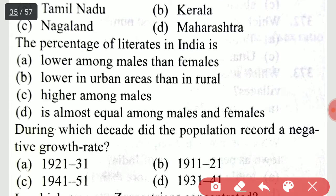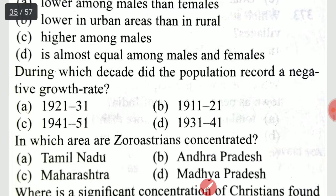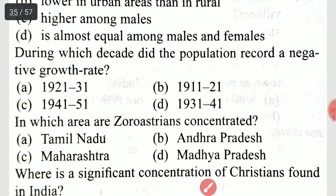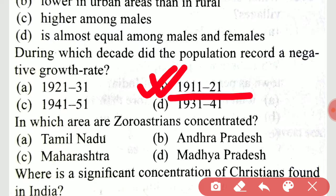The percentage of literates in India is higher among males. During which decade did the population record a negative growth rate? A very important question — it is 1911 to 1921. The population recorded a negative growth in that decade.